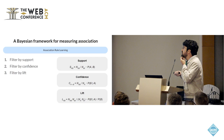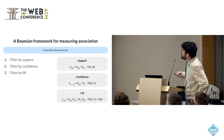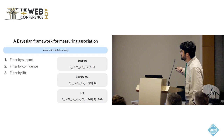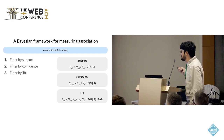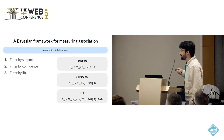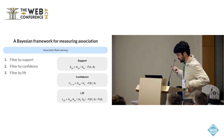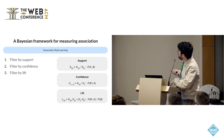One important thing to highlight is that these measures are point estimates. Due to statistical fluctuations, unless you have a lot of data, you might be tricked into thinking something is associated when it's not, or the other way around.